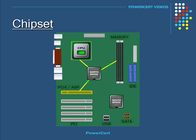The other chip is called the South Bridge. The South Bridge is located at the bottom or southern portion of the motherboard near the PCI bus slots. The South Bridge connects to the PCI bus slots, SATA and IDE connectors, and USB ports.